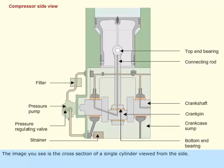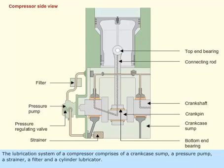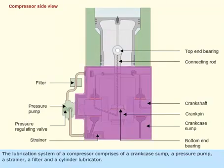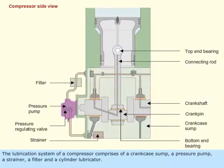The image you see is the cross section of a single cylinder viewed from the side. The lubrication system of a compressor comprises of a crank case sump, a pressure pump, a strainer, a filter, and a cylinder lubricator.